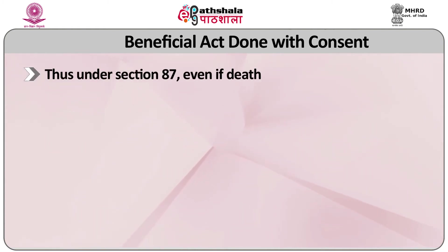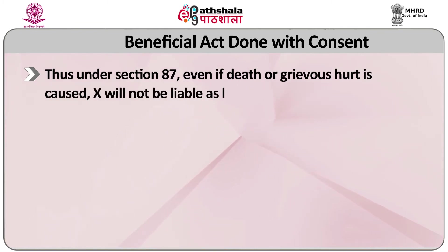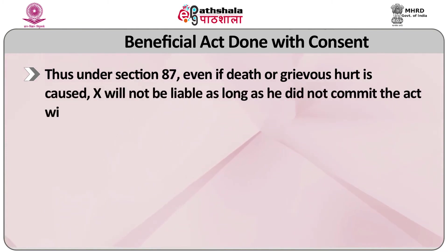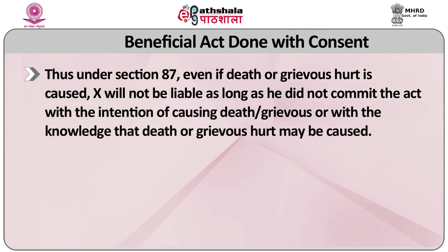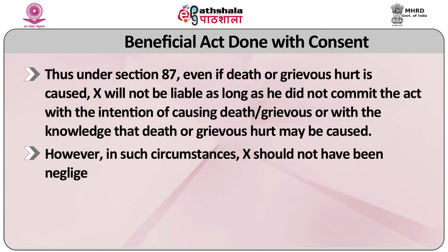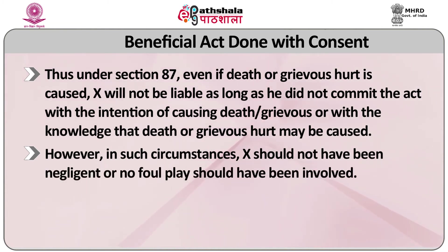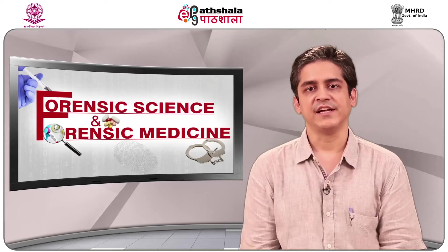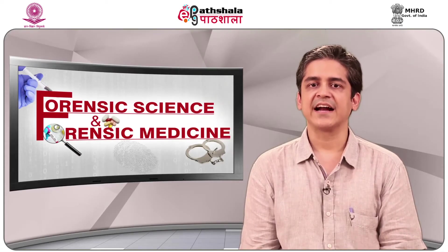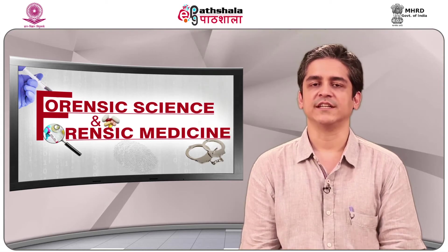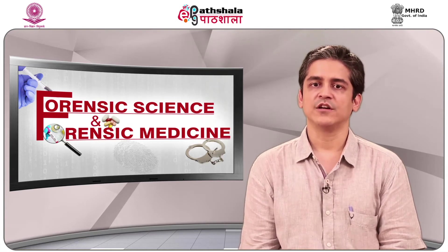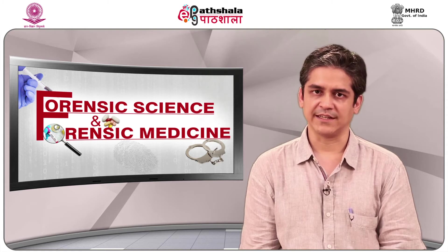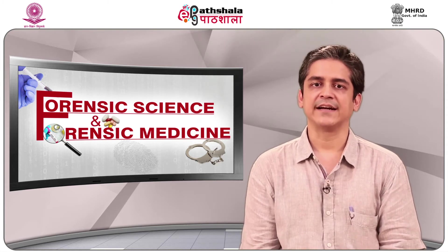Under section 87, even if death or grievous hurt is caused, X will not be liable as long as he did not commit the act with the intention of causing death or grievous hurt or with the knowledge that death or grievous hurt may be caused. However, in such circumstances, X should not have been negligent and no foul play should have been involved. Under section 88, the only requirement is that the act must not have been committed with the intention of causing death. Thus, even if X knew that death is likely to be caused but committed the act without the intention of causing death, he is protected as long as he has acted in good faith.